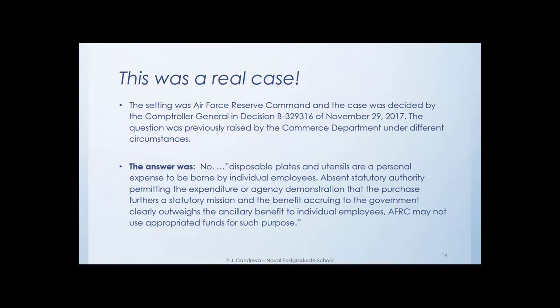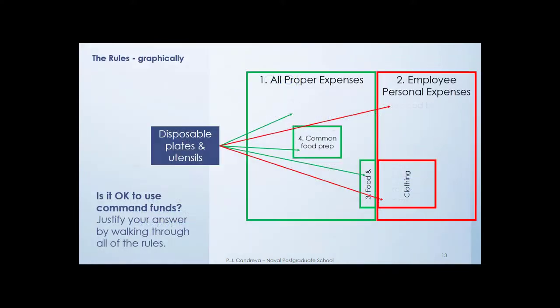Going back to the diagram, what the Comptroller General was saying is that disposable plates fall into the personal food-related expense category — they do not fall into the food exemption, and they are not considered a common item. This is an example of how we would isolate the issue and figure out how to apply this set of rules to this set of facts.